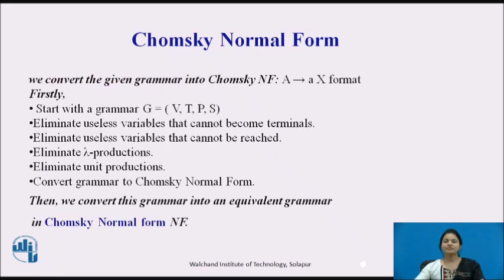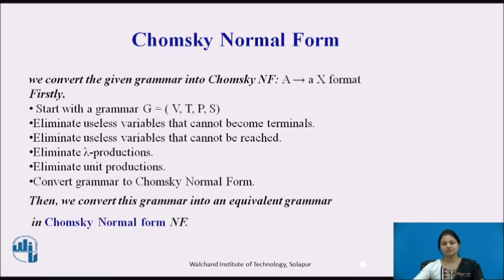We convert the given grammar into Chomsky normal form, that is the A producing AX format. Initially we start with the grammar G consisting of the format G = (V, T, P, S), that is non-terminals, terminals, productions, and start symbol.